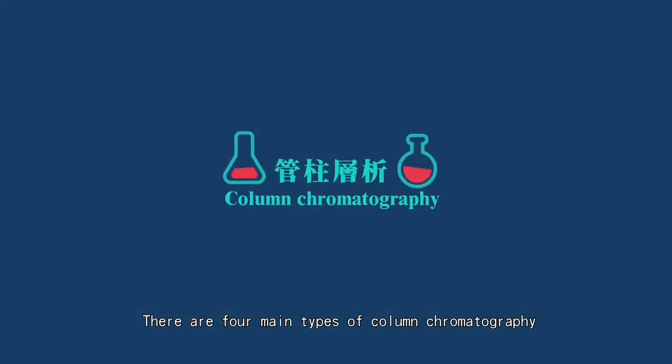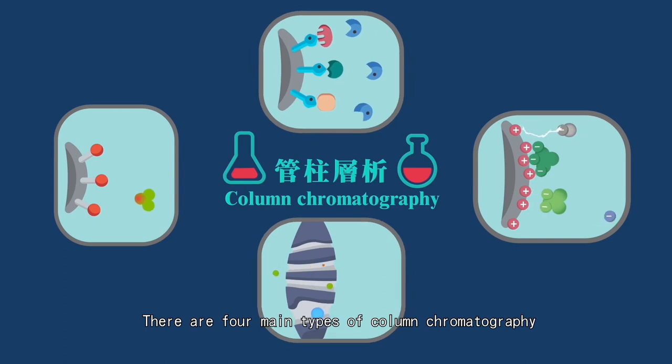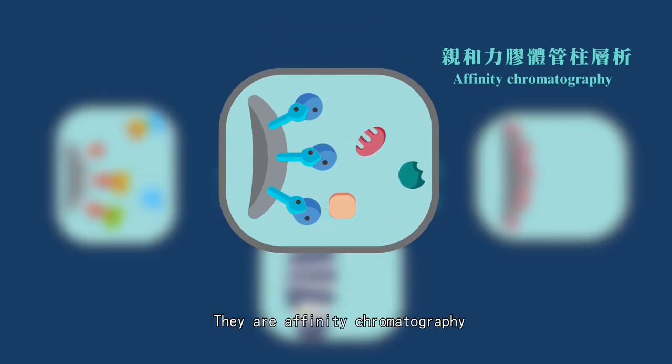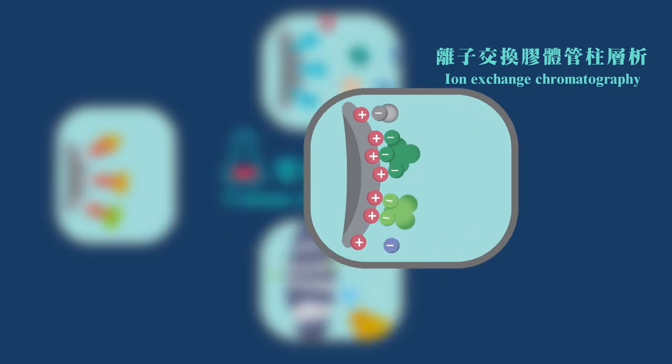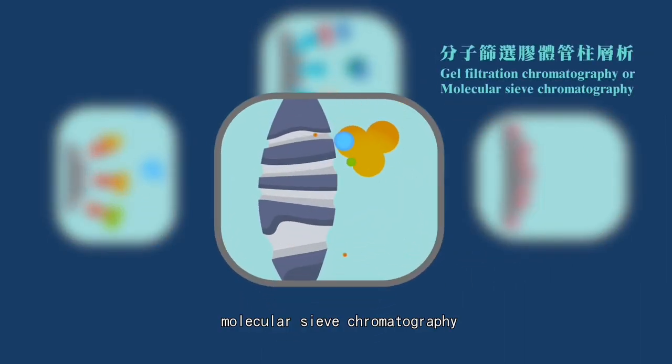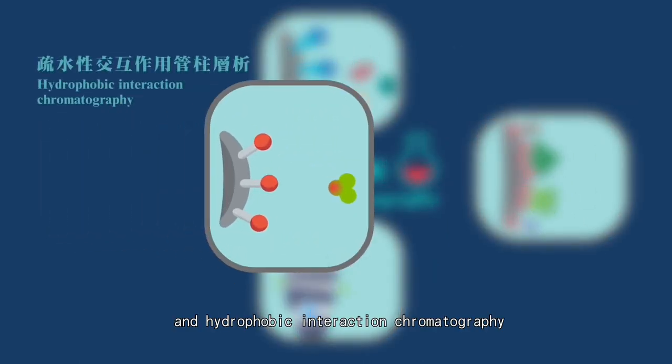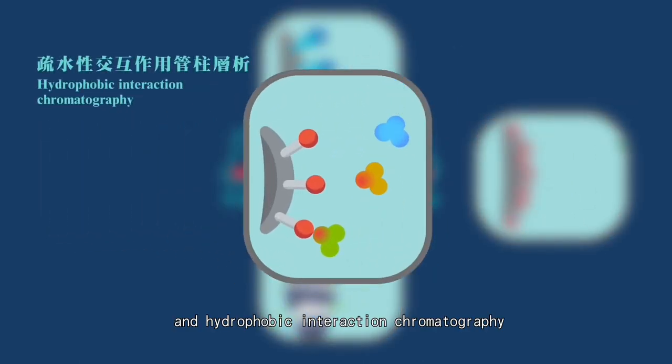There are four main types of column chromatography. They are affinity chromatography, ion exchange chromatography, molecular sieve chromatography, and hydrophobic interaction chromatography.